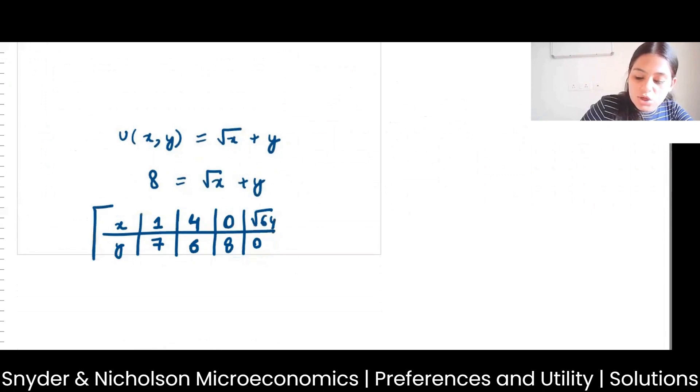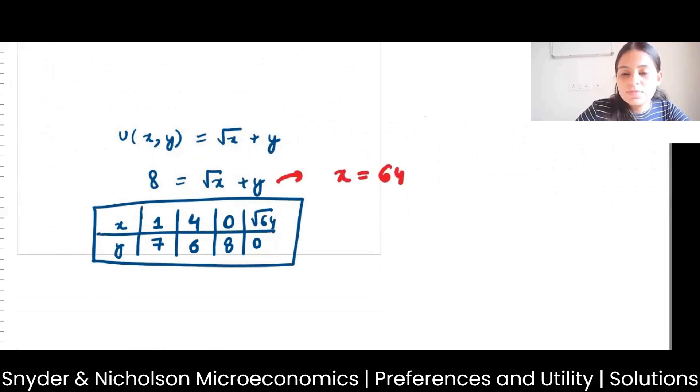You can take different values of x and y to solve this question. So just assume that x is 64. Then your utility that you will get will be root 64 and y is 0, plus 0. So this would be 8 plus 0, and this would be 8.